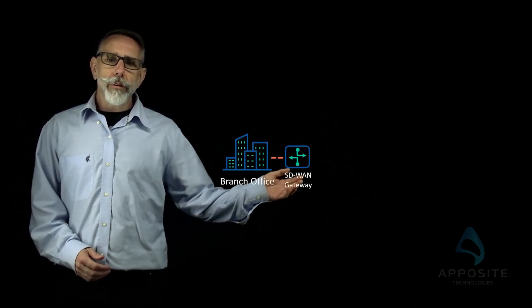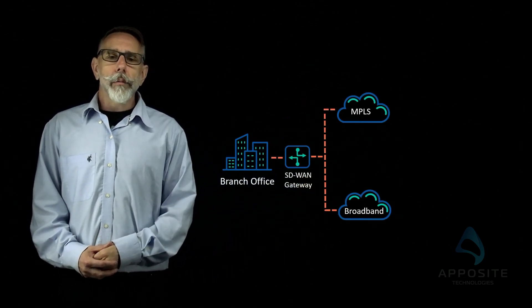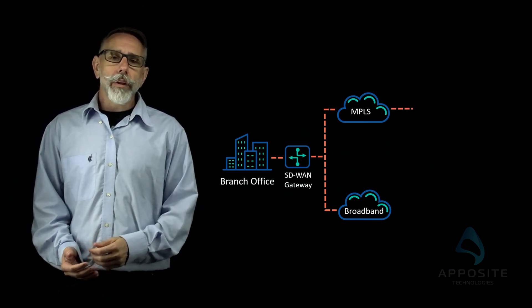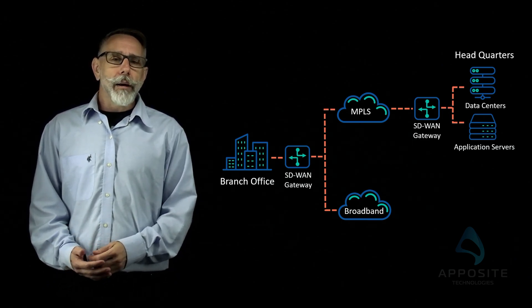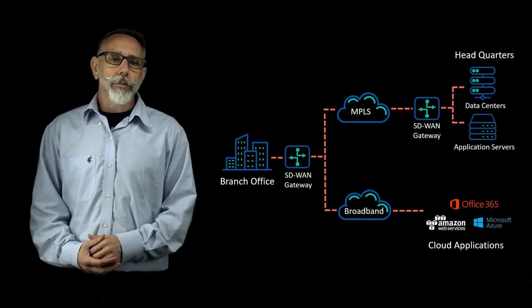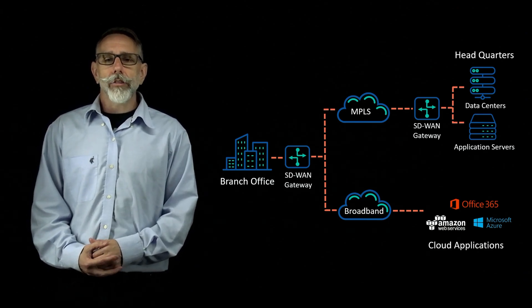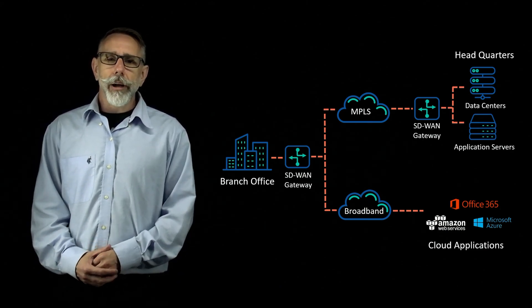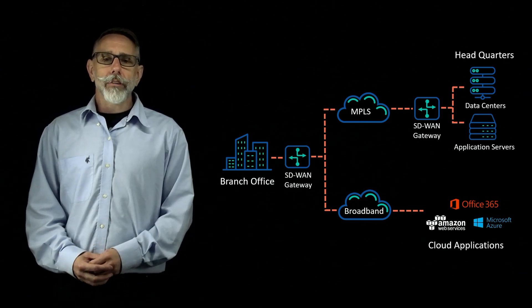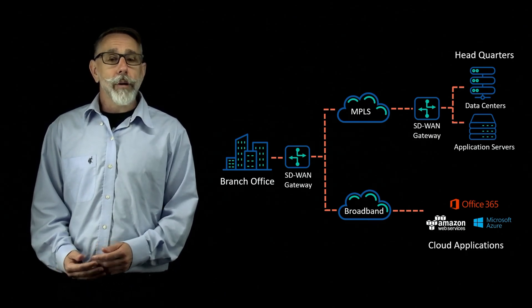Let's start with what a typical SD-WAN network could look like. Here we have a branch office with an SD-WAN gateway. The gateway is interfacing with an MPLS and broadband network. The MPLS network is responsible for carrying data to the headquarters, which has an SD-WAN gateway as well. The branch gateway will also have a broadband network that could connect to cloud applications or SaaS services. It's the function of these SD-WAN gateways to decide which application should traverse the MPLS or the broadband network. When testing the performance of your SD-WAN, a traffic generator is an excellent tool because it can simulate a variety of application traffic and test whether the SD-WAN gateway is making correct routing decisions.